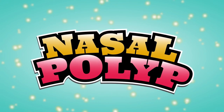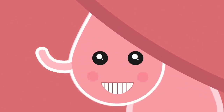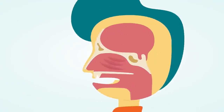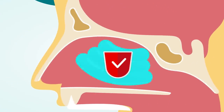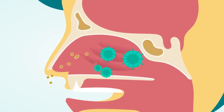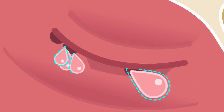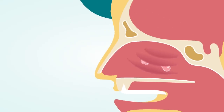Nasal polyp: nasal polyps are fleshy swellings that develop in the lining mucosa of the nose and paranasal sinuses — air-filled spaces linked to the nasal cavity. They are non-cancerous growths. The mucosa is a very wet layer that helps protect the inside of the nose and sinuses. During an infection or allergy-induced irritation, the nasal mucosa becomes swollen and red. With prolonged irritation, the mucosa may form a polyp — a round growth like a small cyst that can block nasal passages.